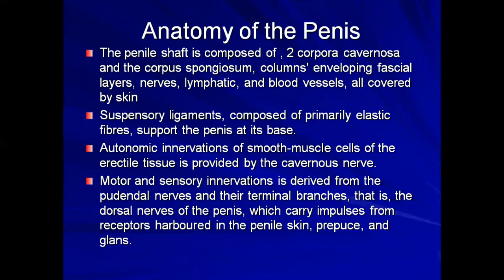Let's look at the anatomy of the penis. The penis primarily has two erectile tissues — the corpora cavernosa, which lie side by side. Below them is the corpus spongiosum, which contains the urethra. The fascial layers envelope the nerves, lymphatics, and blood vessels, which are eventually covered by the skin. The suspensory ligaments, which are elastic fibers, support the penis at the base.